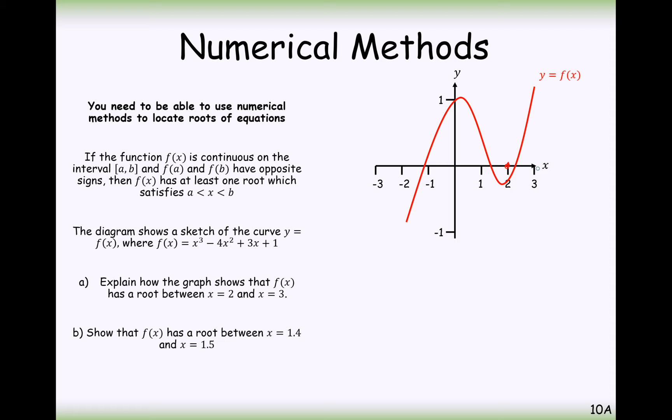And we can clearly see that if we were to find the value of F of 2, that would be negative, and F of 3 would be positive. So we need to write a sentence here. Since the graph crosses over the X-axis between 2 and 3, there must be a root in this interval. And the F of 2 value is negative, the F of 3 value is positive. So somewhere in between 2 and 3, there must be a value that gives us 0 as our output.